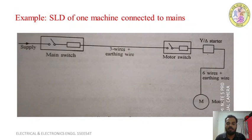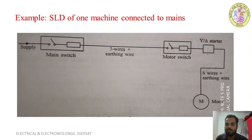This is the single line diagram of a pump set connected to the mains. From the supply, it goes to the main switchboard, which has an ICTP and a fuse unit. From there it goes to the starter board, where we take three wires plus an earth wire. In the starter board, there is again an ICTP, a fuse, and a starter. Since the motor rating is above 1 HP, we use a star-delta starter, and from the starter we take six wires plus an earth wire to the motor terminals. The pump is mounted on a foundation.